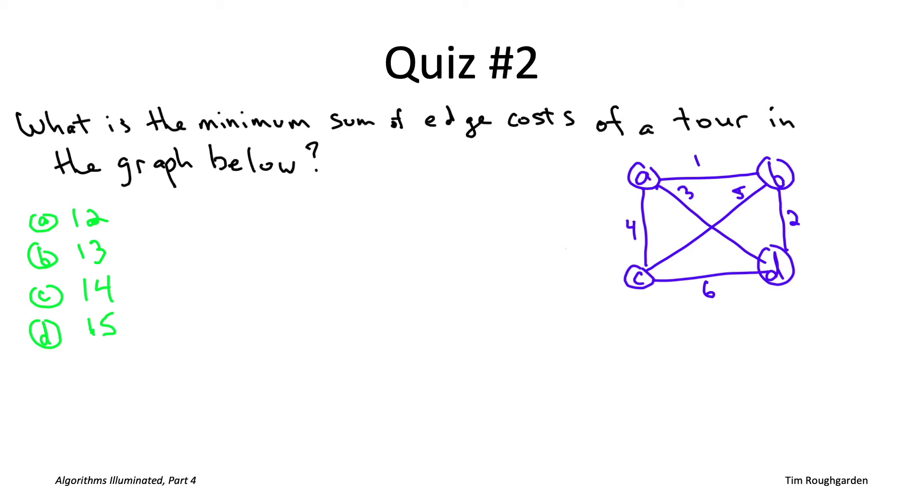Okay, so the correct answer to this quiz is the second one, b, 13. And again, one way you can see this is just to enumerate the three different tours you have in this four vertex graph. There's the one around the sides that does indeed have 13. There's the zigzag path that uses the top and the bottom edge that has overall cost 15. And then there's the one that uses the zigzag and the edges on the side, and that has overall cost 14. So the cheapest of those options is 13, the tour that goes around the perimeter.